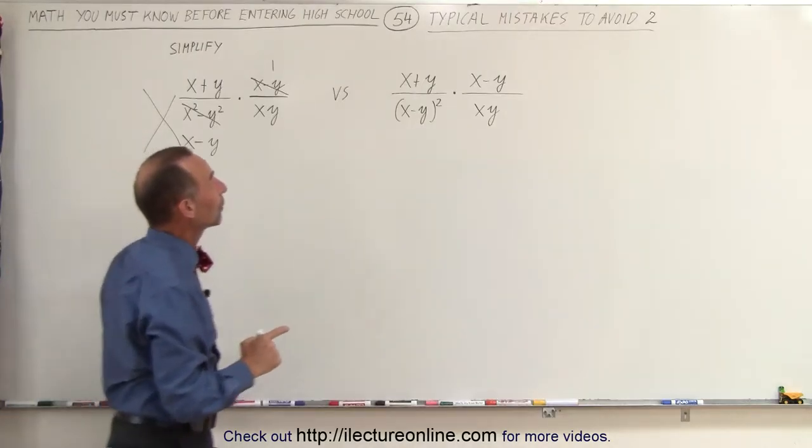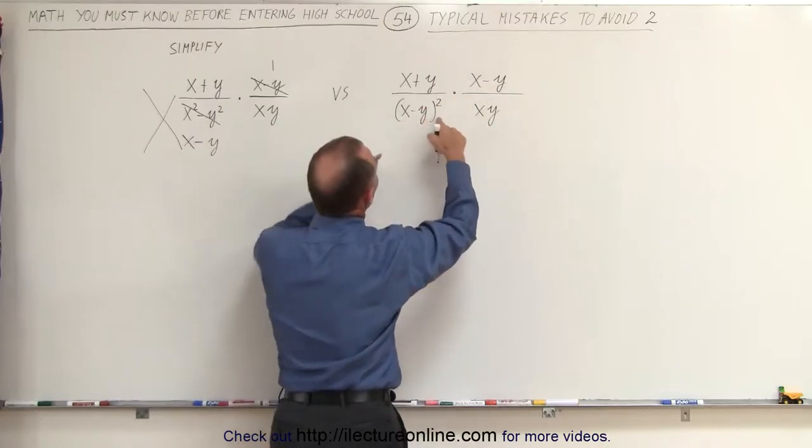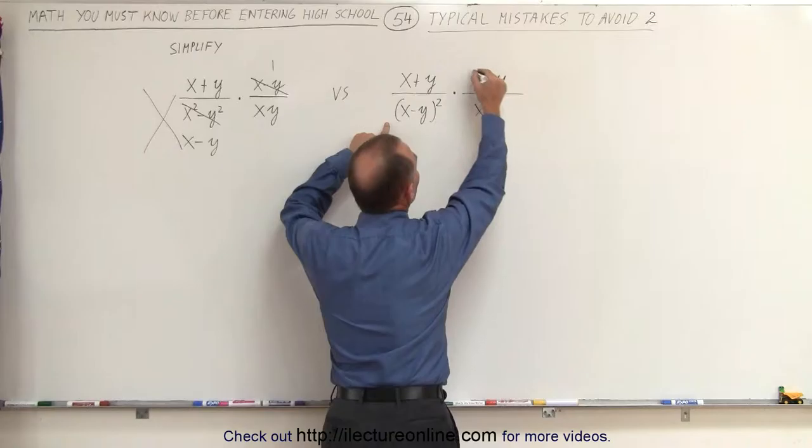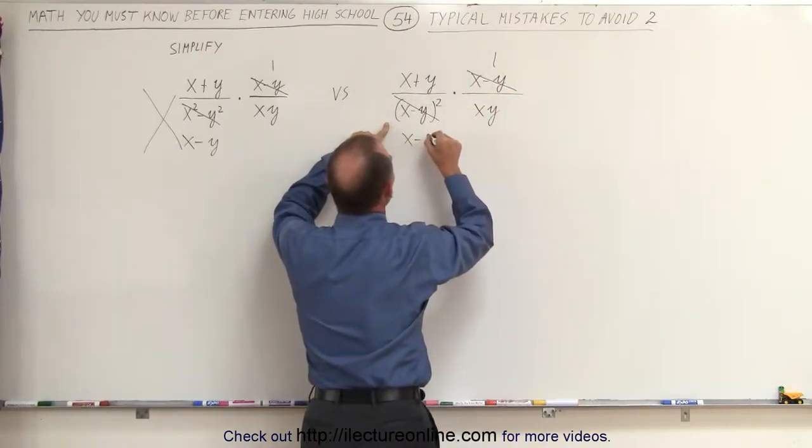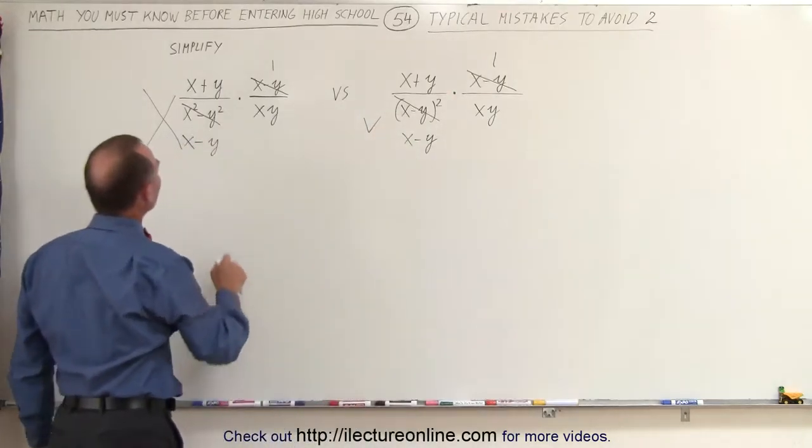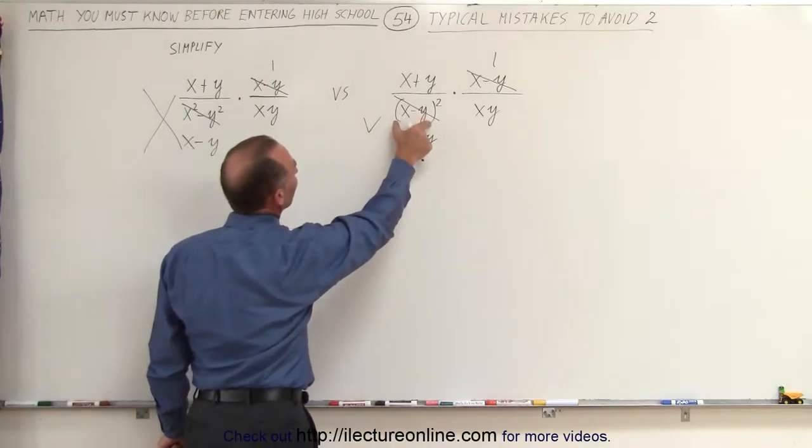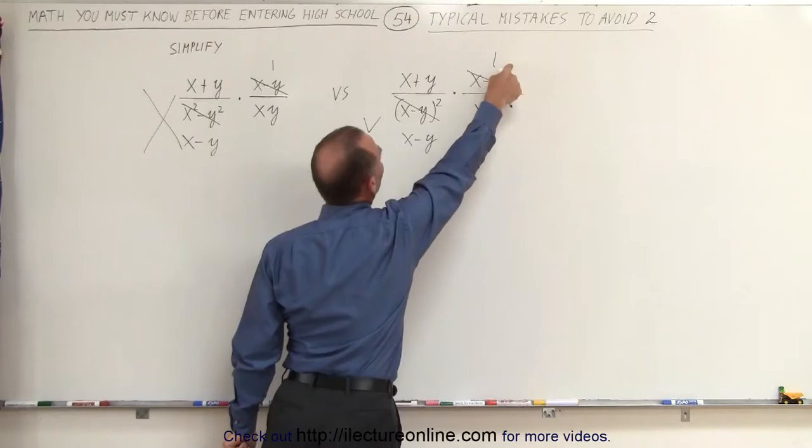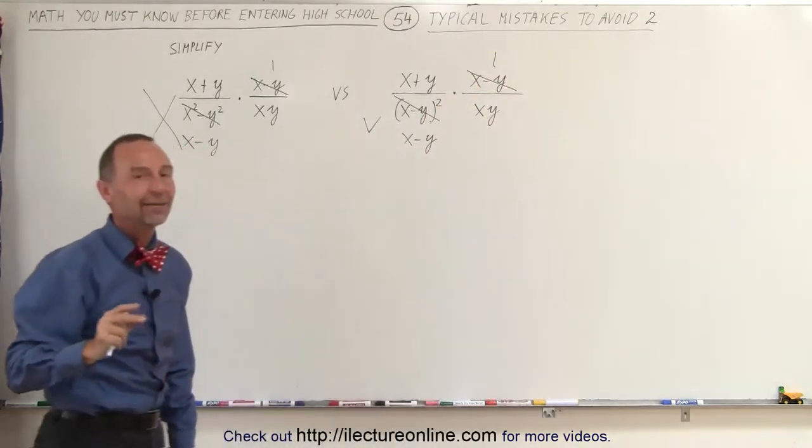Instead, take a look at over here. Here we have an x minus y, and we have an x minus y quantity squared. Here we can say that we can divide this one by x minus y, which becomes 1, and this can be written as x minus y. And that would be correct. Notice the difference? Here it's x squared minus y squared. Here's the quantity x minus y squared. This is to the first power. This is to the second power. So you can go ahead and simplify that.